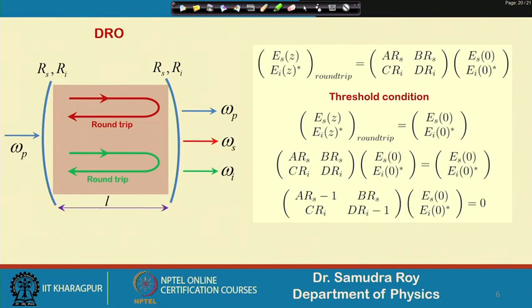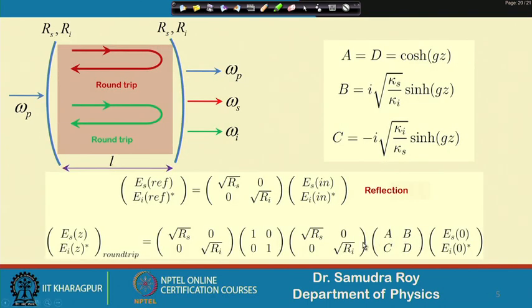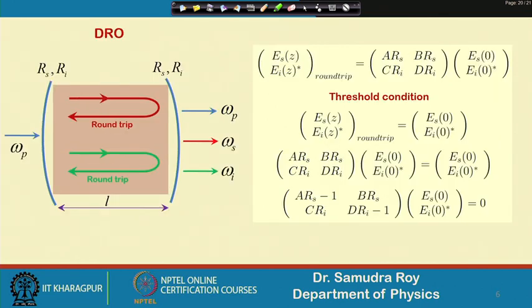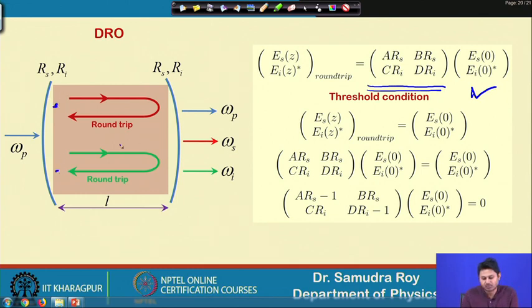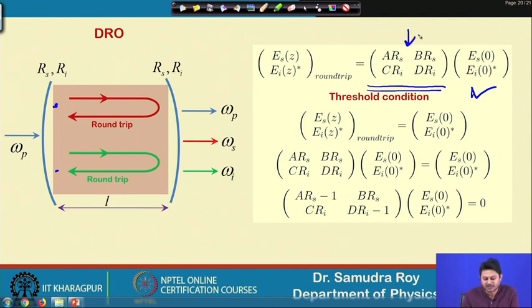For the DRO, multiplying all these matrices together yields a compact matrix form for the round trip. This master matrix represents the functional form of fields E_s and E_i at any point in the cavity after one complete round trip.